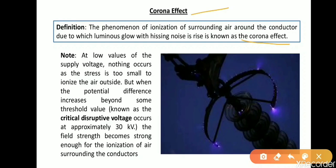Corona effect happens in high voltage transmission lines. What happens is the surrounding air gets ionized, and due to that ionization we observe a luminous glow and hissing noise, as we can see in the figure. There is a violet luminous glow and we can also hear a hissing noise.